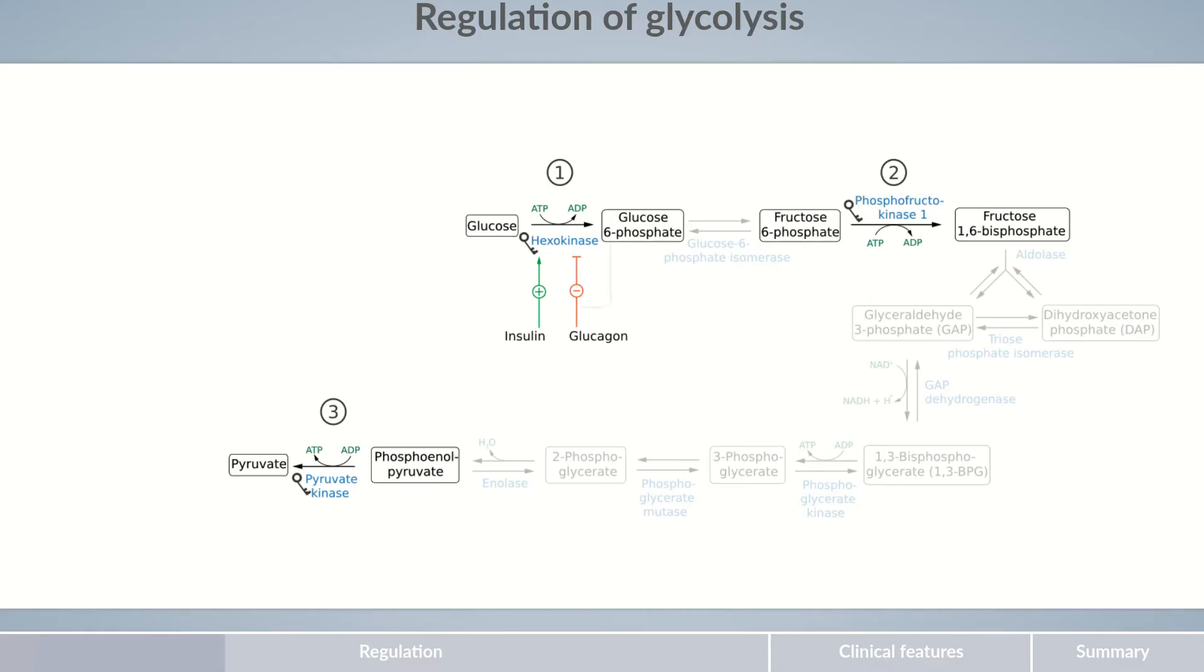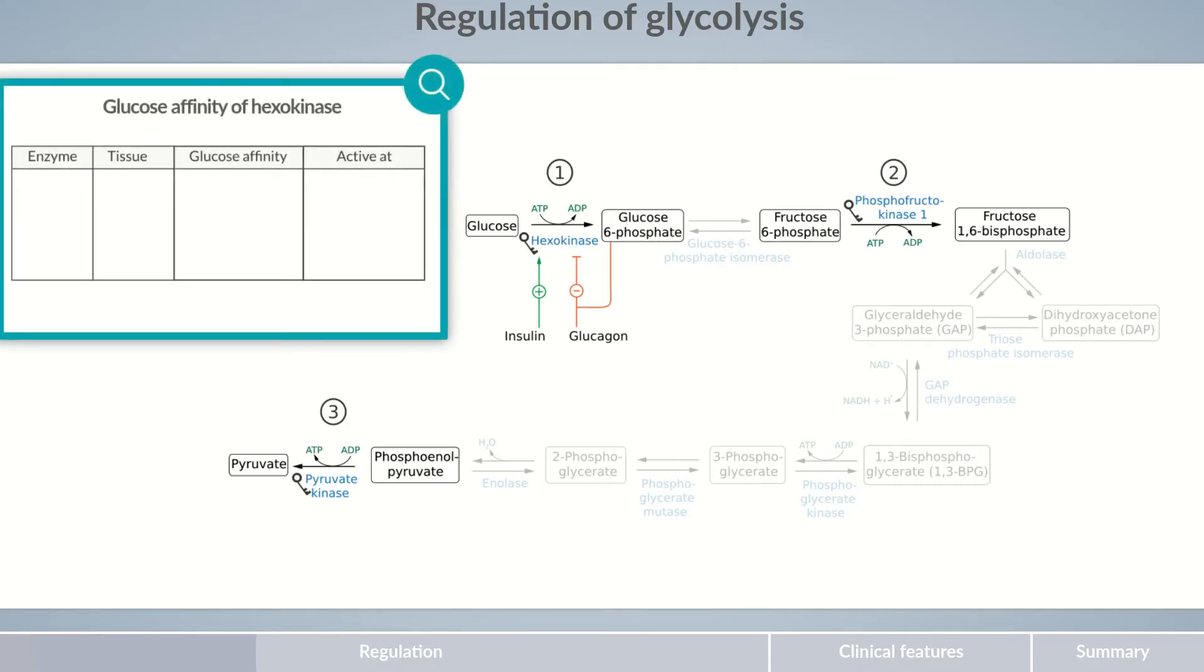Another inhibitor for hexokinase is its product, glucose-6-phosphate. It ensures that only a moderate amount of glucose-6-phosphate is produced in the cell. An additional determining factor for the fine-tuning of glycolysis is the glucose affinity of the various tissue-specific hexokinases. Hexokinase-4, also termed glucokinase, which is present in the liver, has a low affinity for glucose. Hexokinases of other tissues have a higher glucose affinity. This ensures that at low glucose concentrations, extrahepatic tissues are preferably supplied. Only if there is a high blood glucose concentration in the portal vein, the liver begins to store glucose as glycogen.